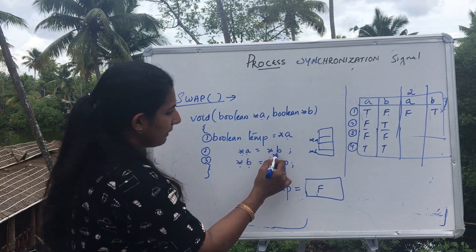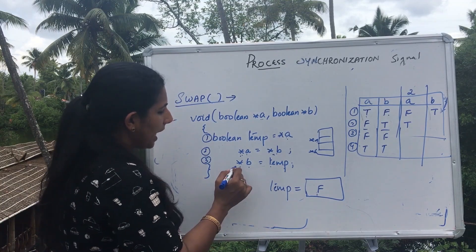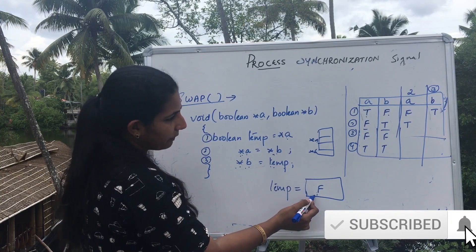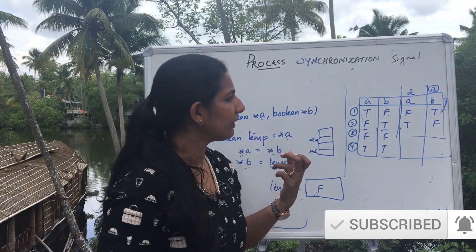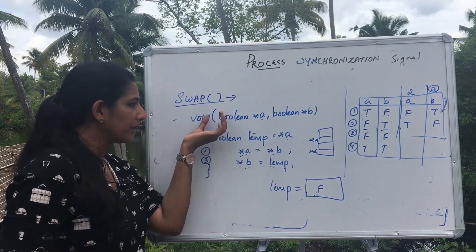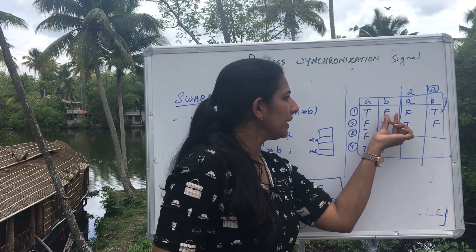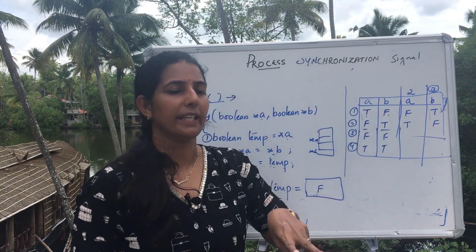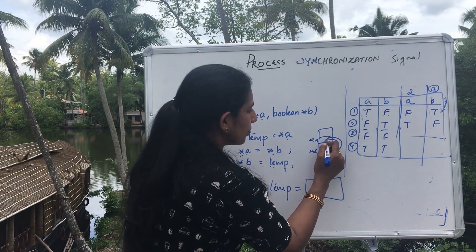B will have the value of a, so b is true. A will have the value true, and after line 3, b will have the value of temp, which is false. Taking these two cases, I can say that after executing the swap function, the value of a is transferred to b and the value of b is transferred to a. An exchange of values in a and b happens — a value goes to b and b value goes to a. So a swap or exchange function is defined here. If both are false, both remain false; if both are true, both remain true.